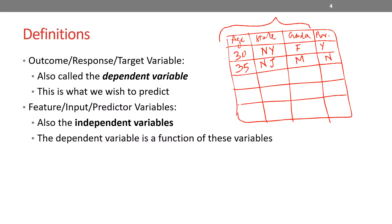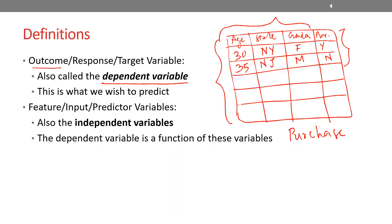I'll base my prediction on the data I already have — collected from my current website — ages of different customers, their state and gender. I'm trying to create a relationship to predict whether the person is going to buy something or not. This outcome variable — whether somebody buys or not — is the dependent variable. In our example, it's 'purchased: yes or no.' This is also called the outcome, response, or target variable. Whenever you see any of those terms, know that it refers to the dependent variable — what we wish to predict in the future.